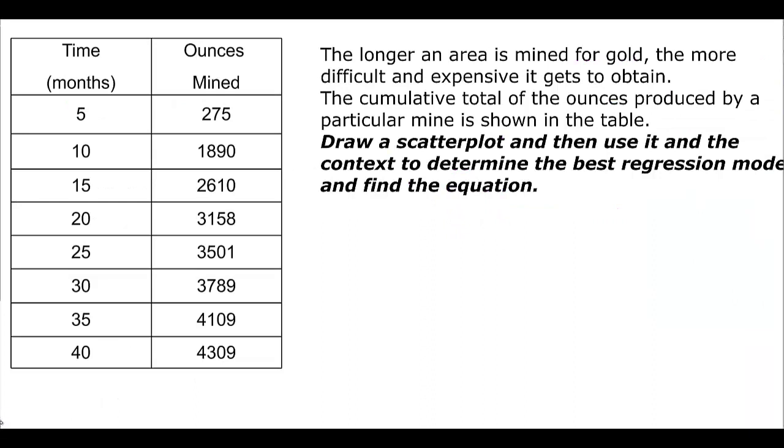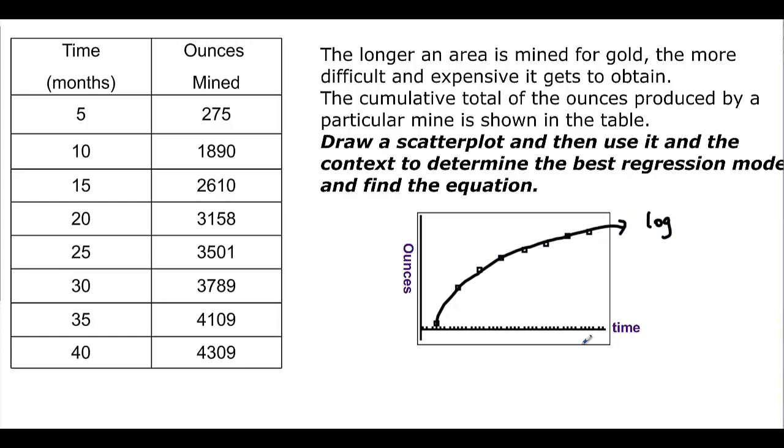Let's try one more. The longer an area is mined for gold, the more difficult and expensive it is to obtain. The cumulative total of the ounces produced by a particular mine is shown in the table. Draw context from a scatter plot and then use it in the context to determine the best regression model to find the equation. If you put all that data in your calculator and pause, you find out that you get this graph. If you look at this graph, can you guess before I tell you? The graph looks logarithmic. We could grow rather rapidly, but then it kind of starts tapering off. So that could be very well be logarithmic. But the scattergram is usually the real telltale sign.